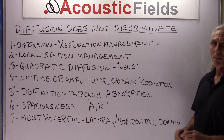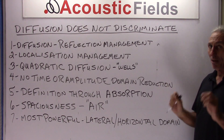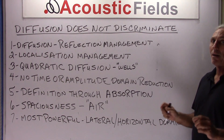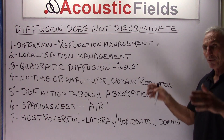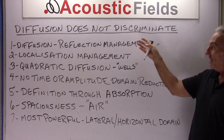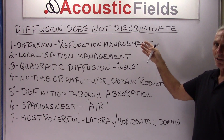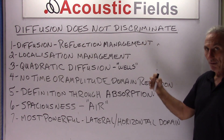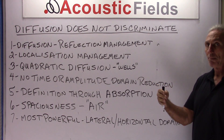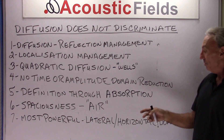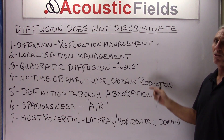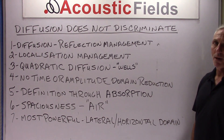You want to get your definition correct with absorption, because once you put your absorption-defined signal into the diffuser, it's going to give you exactly that kind of sound quality back — it won't discriminate. So get your definition correct through absorption first, and then apply diffusion.